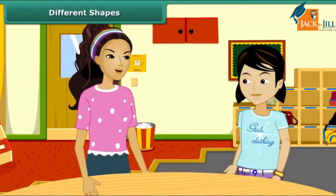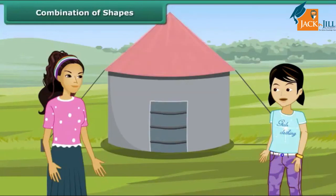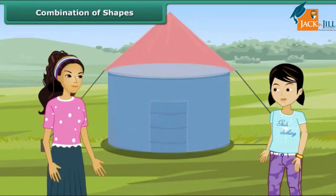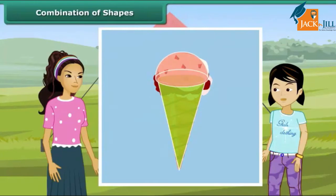Wow, Rita! You are learning so fast! Tell me more about these shapes. Rita, look at this tent. This is made up of two shapes. Can you tell the name of the shapes? Yes, I can see the shapes. One is a cone and another is a cylinder. Correct. Similarly, we have ice cream — we can see that the cone is surmounted by a hemisphere.